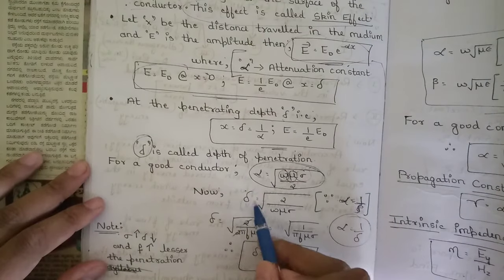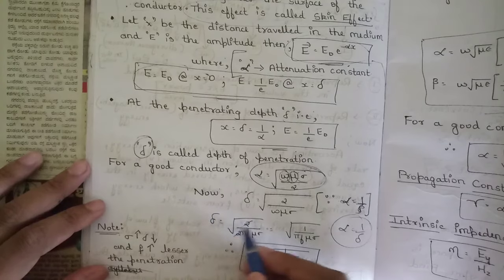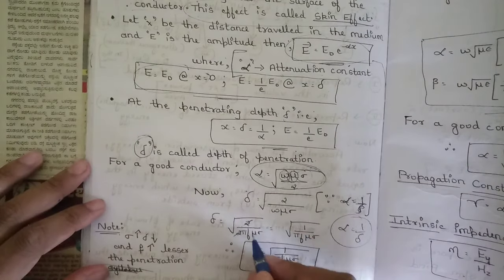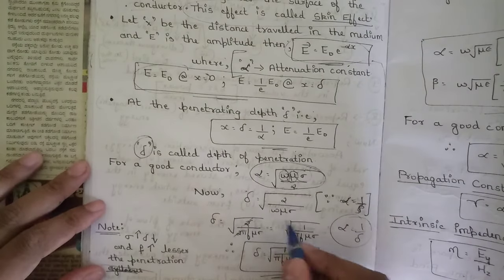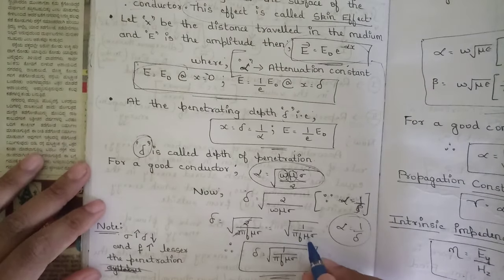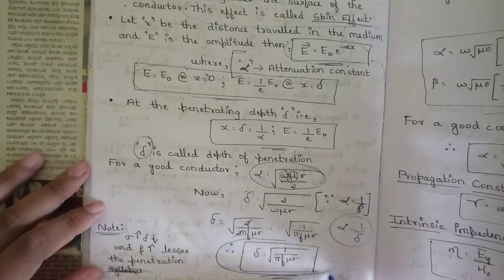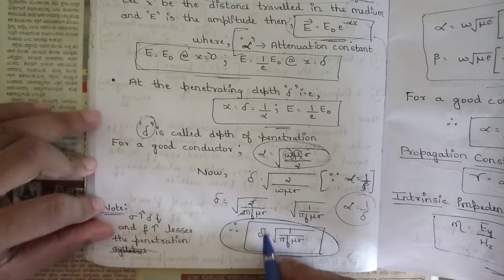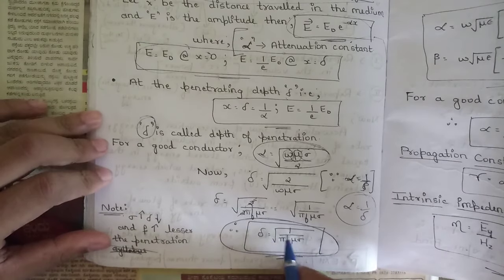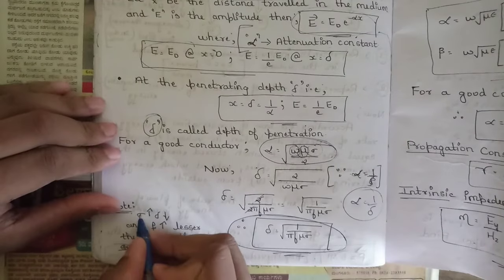Taking the reciprocal: δ = √(2 / ωμσ). Replacing ω with 2πf, the 2's cancel, giving the final expression: δ = √(1 / πfμσ). This is the derived expression for depth of penetration.